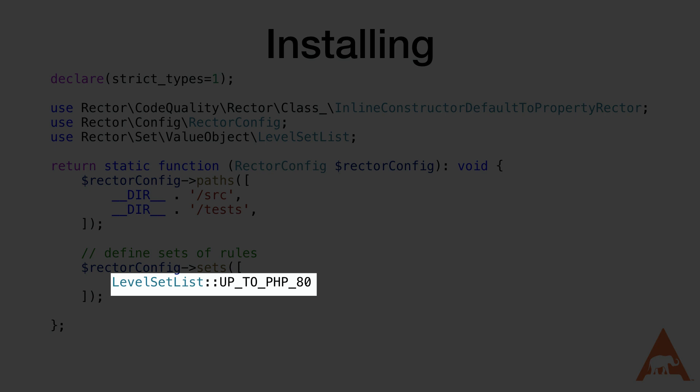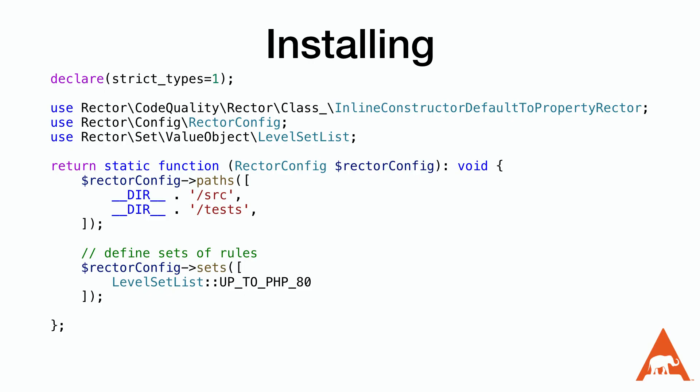In this case, the rule is named LevelSetList up to PHP 8.0, which will include all the rules needed to make sure that our code has all of the changes necessary to be as compliant as possible for PHP 8.0. There's also an up to PHP 8.1 and an up to PHP 8.2 if we want to go higher.